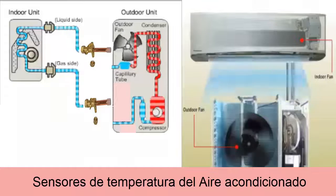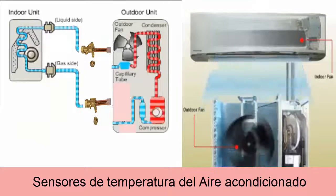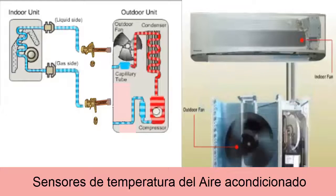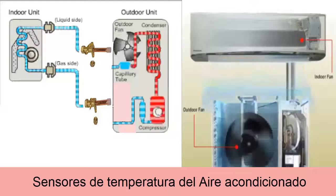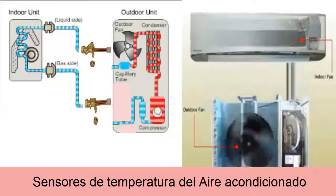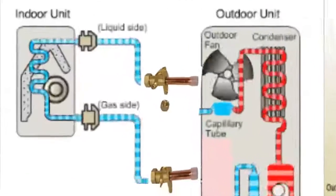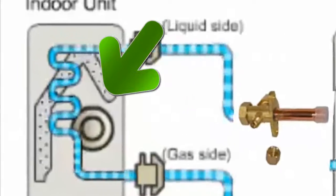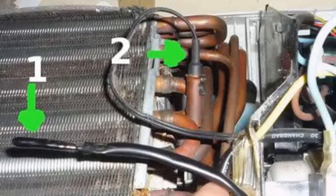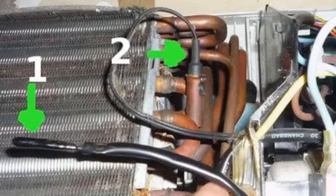In this video, we are going to talk about the number of temperature sensors that an air conditioner has and the failure codes that these can generate. In most air conditioning equipment, we find two types of sensors: the temperature sensor of the local environment, and the well sensor that is in charge of measuring the temperature of the evaporator to determine if there is freezing.